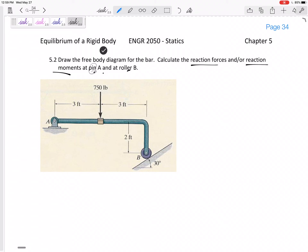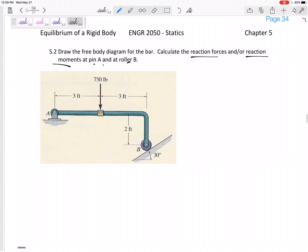So it tells us it's a pin, but we should be able to tell from the figure it's a pin here. B is just a roller.